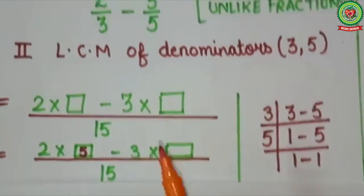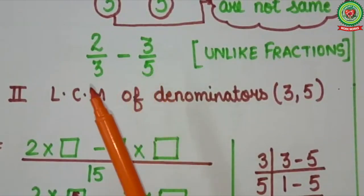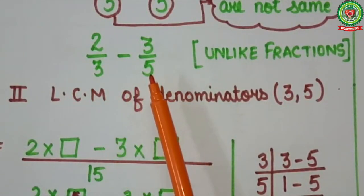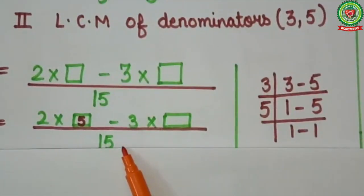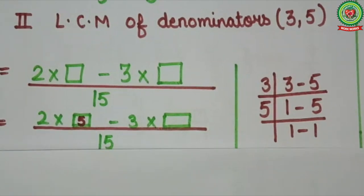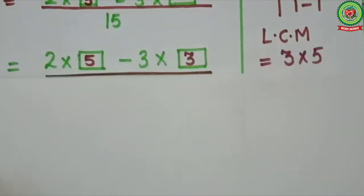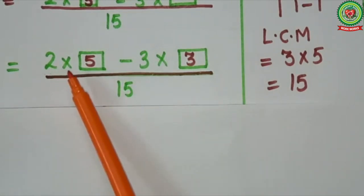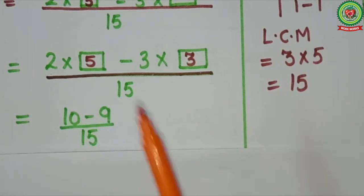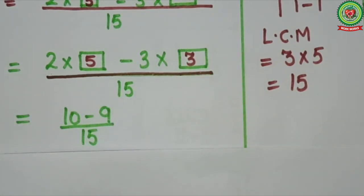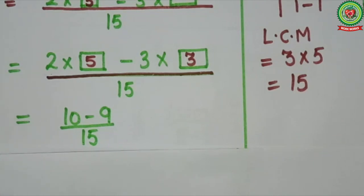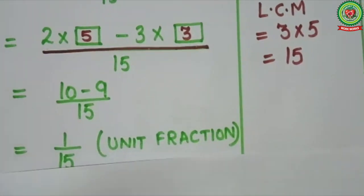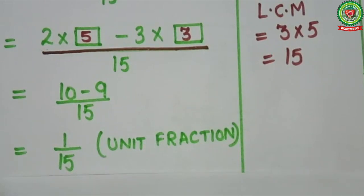Now see second fraction. Here denominator equals to 5. In table of 5, 15 will come at 3. So we will write 3 in the second bracket. First multiply, then subtract. 2 fives are 10, and 3 threes are 9. So here we will write 10 minus 9 upon 15. Now 10 minus 9 equals 1. So the answer is 1 upon 15.